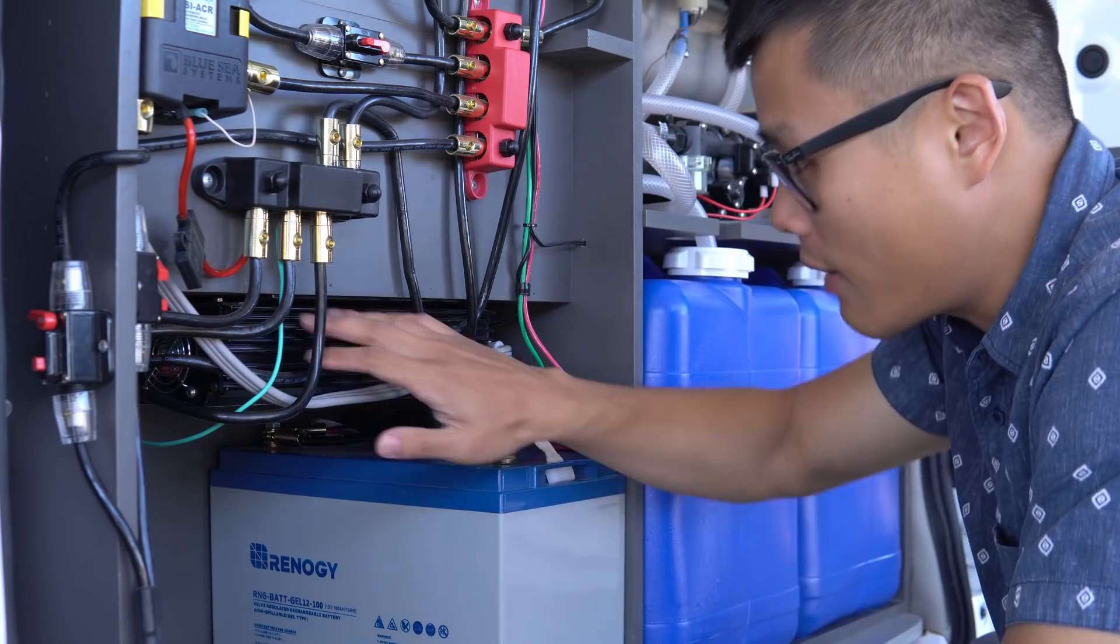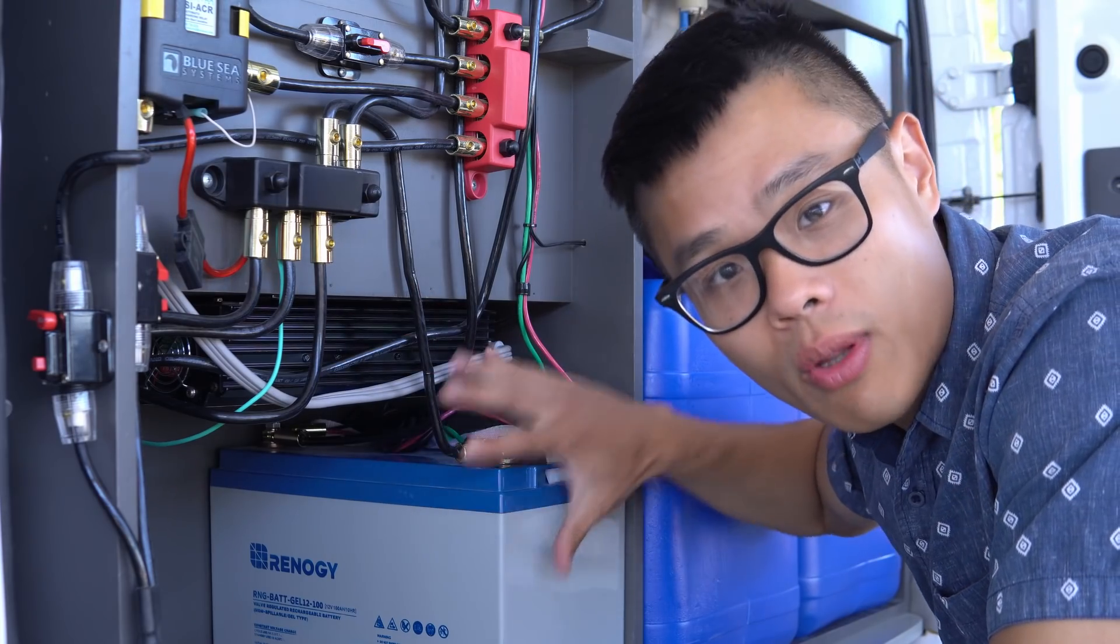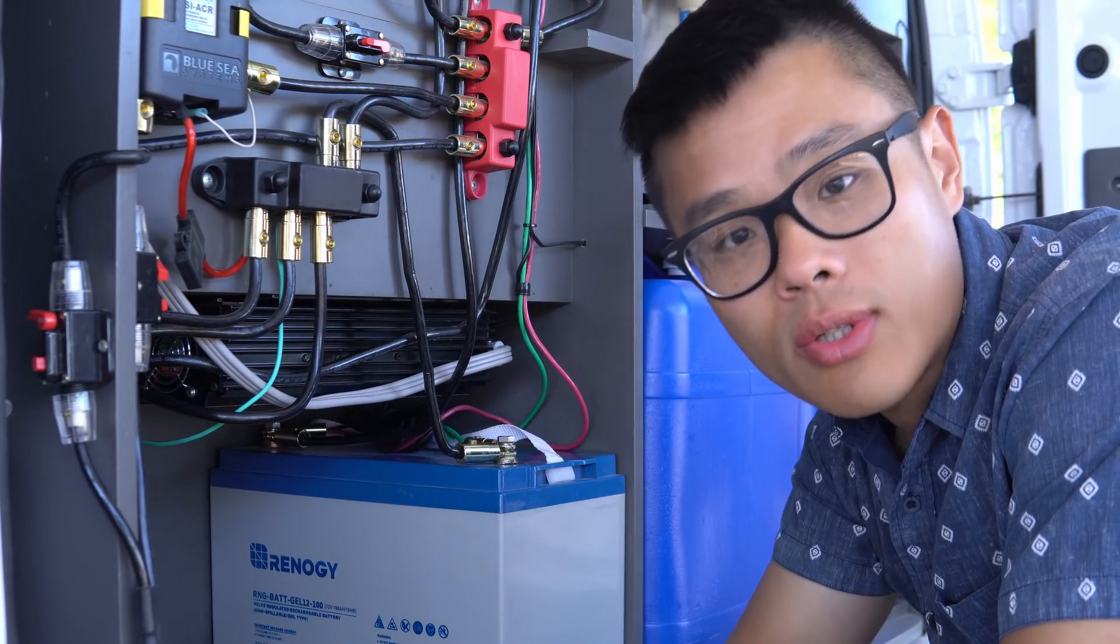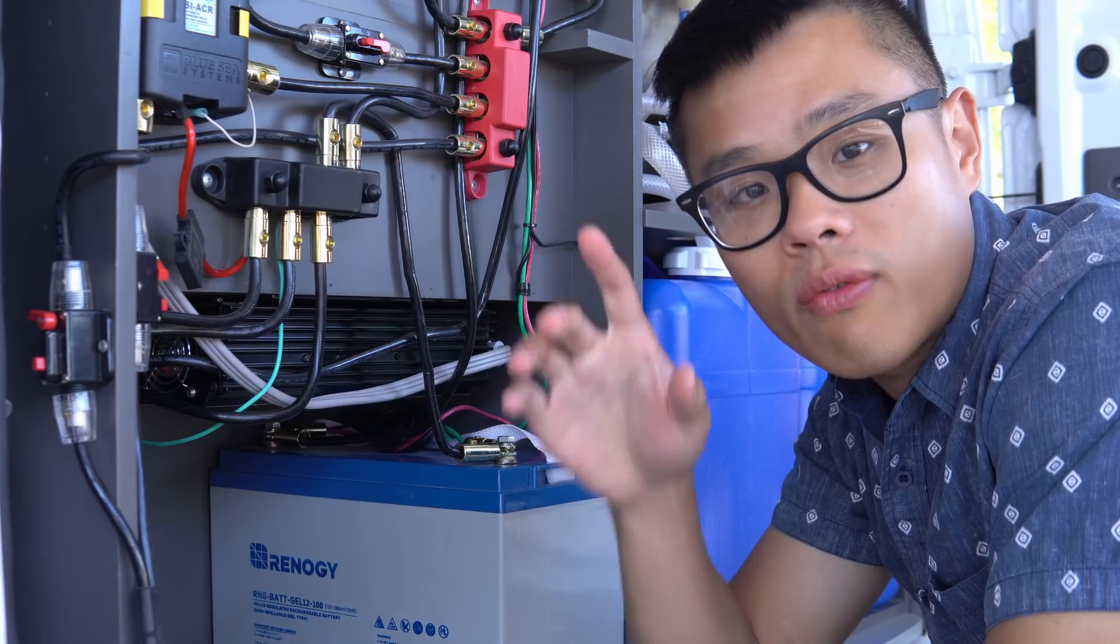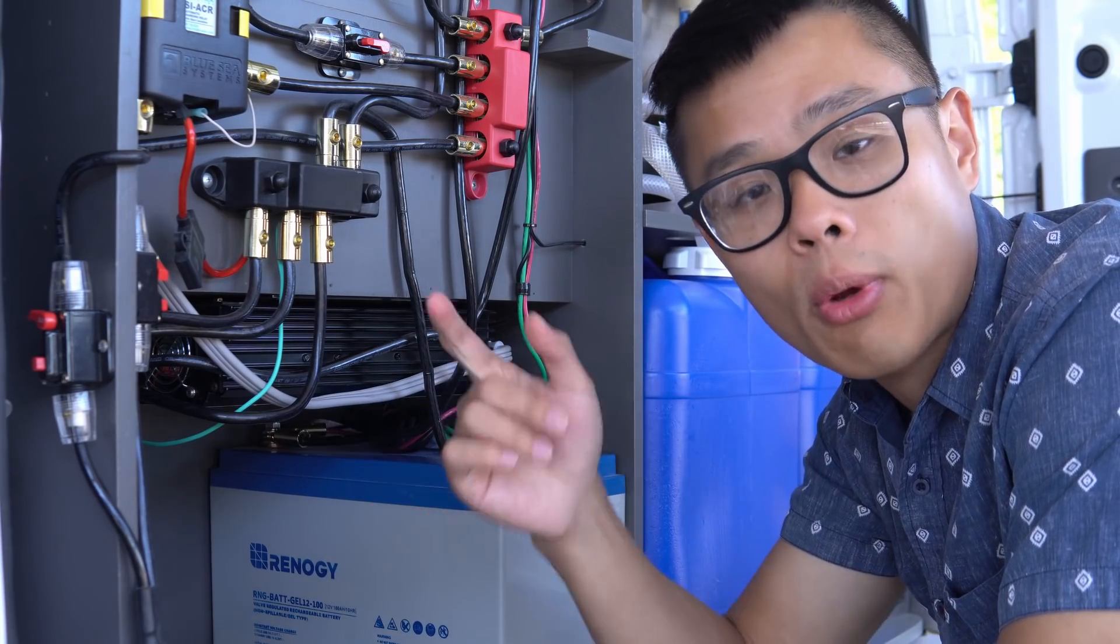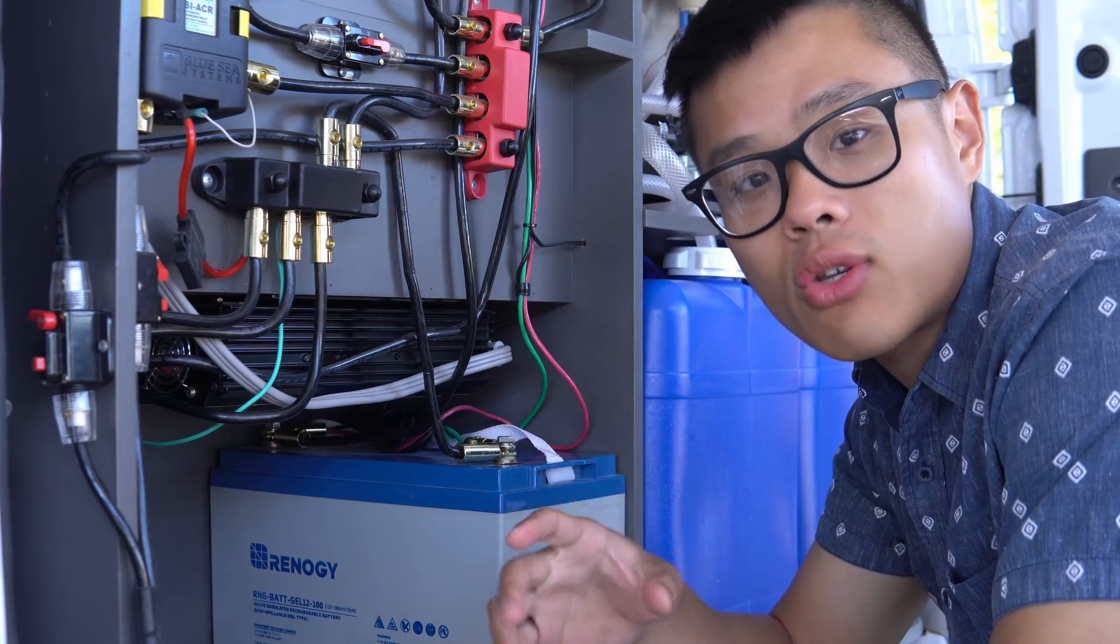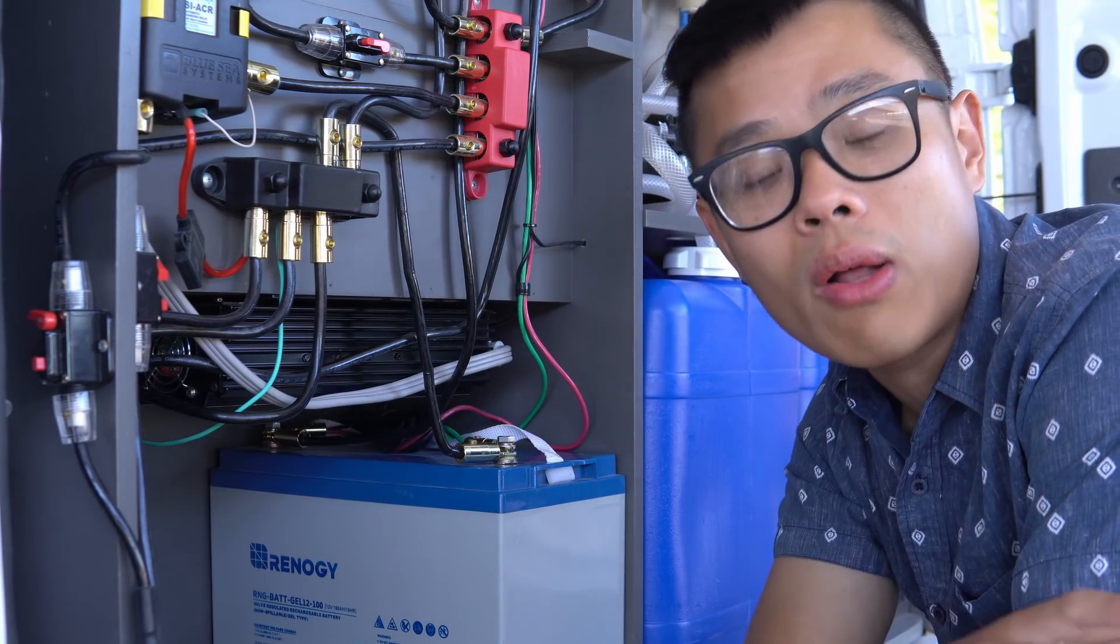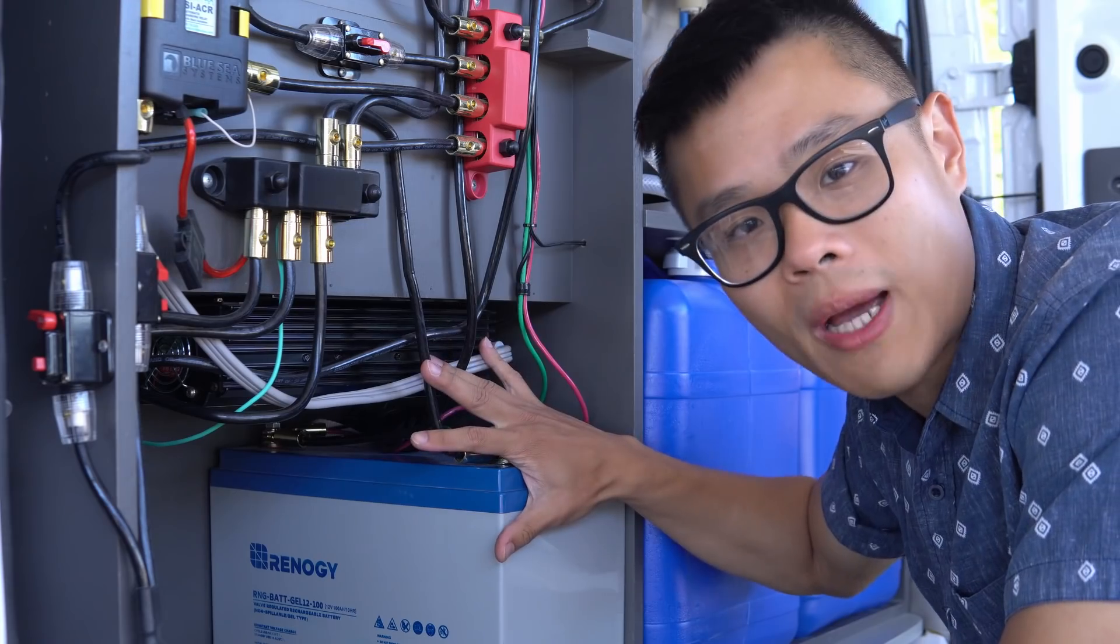A regular inverter, like the one I have right here, converts DC power from the battery to AC power that I can use in my van. But there are inverters that can do the reverse process with an AC to DC charger built into the same unit. This gives you the added bonus of taking AC power from anything like a wall outlet in your house to charge your house battery.